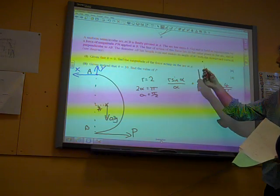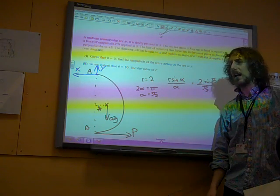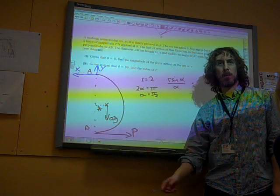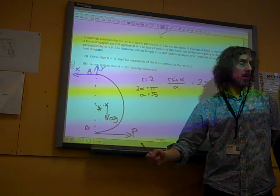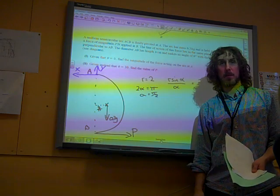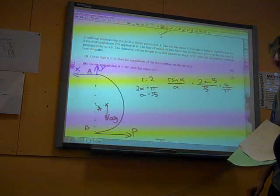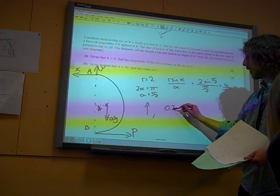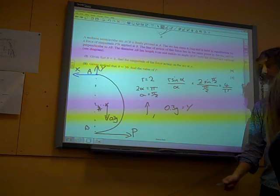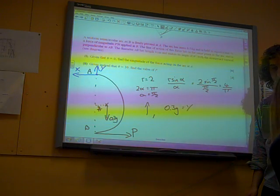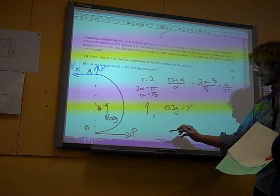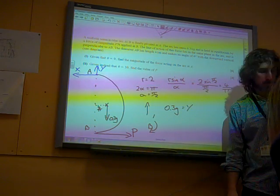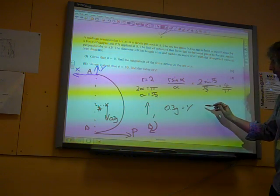Now we're supposed to be finding the magnitude of the force acting on the arc at A, and we don't know what this force P is. So we're going to somehow not include this force P in what we're doing. So we're going to take moments. We've got two things we can look at. If we resolve vertically to start with, we don't need to worry about P because it's horizontal. So we've got that 0.3g equals Y. So straight away we get the value of Y. We'll leave it as 0.3g, it's fine.